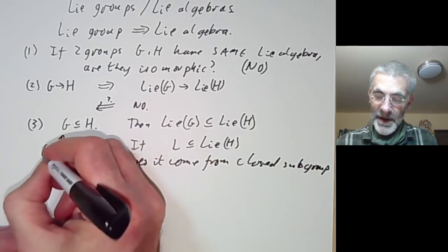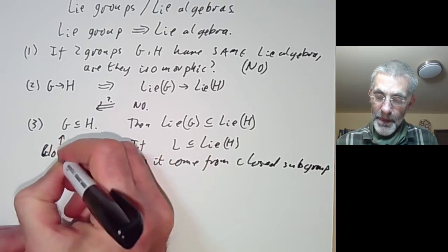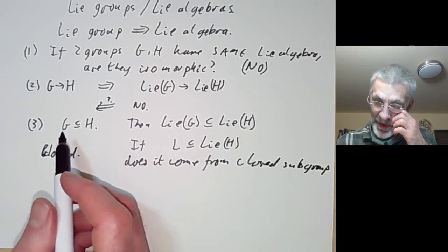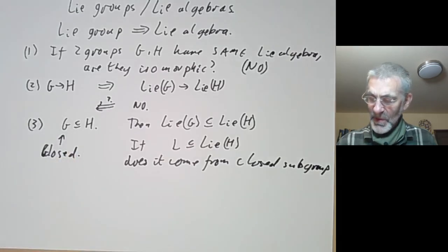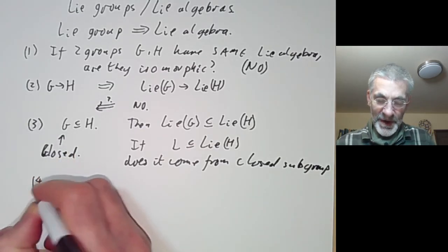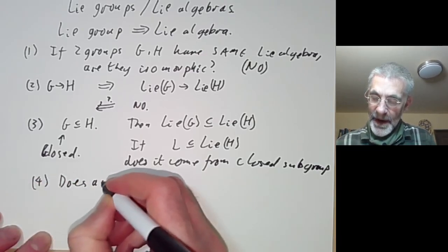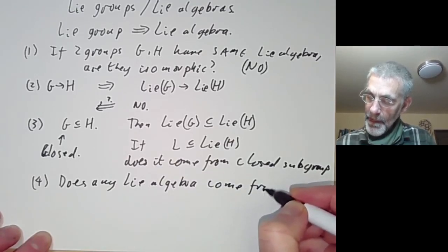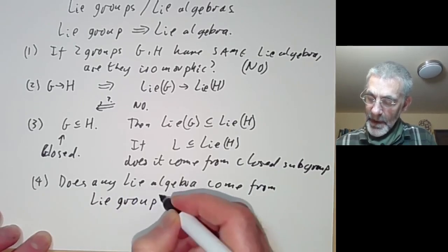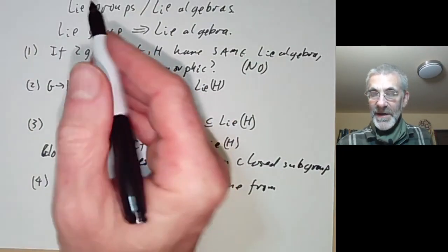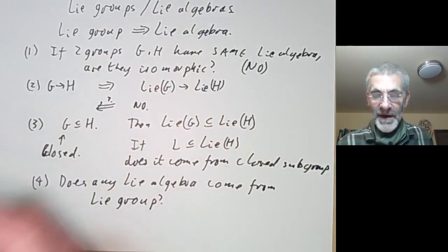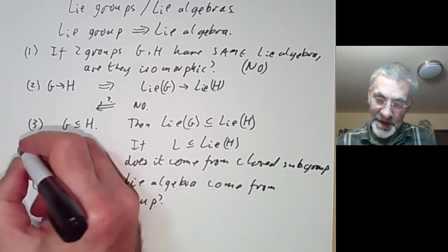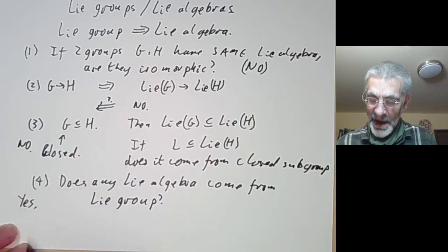G should be a closed subgroup of H. Non-closed subgroups can be very weird, and generally when you talk about a subgroup you're very often talking about a closed subgroup. The fourth question we can ask: does any Lie algebra come from a Lie group? In this lecture we're implicitly assuming that all Lie groups and Lie algebras are finite dimensional — the infinite dimensional case gets a lot trickier. The answer to question three is no, and the answer to question four turns out to be yes for once.